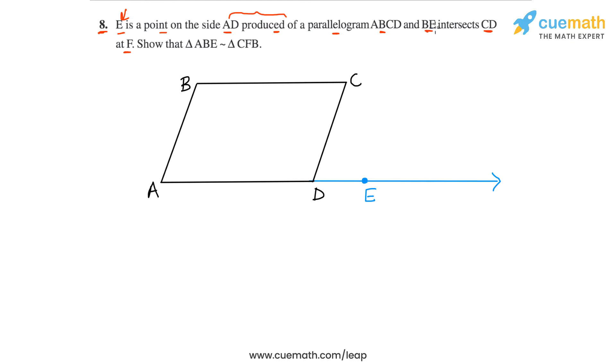And we are told that BE intersects CD at F. So let's join BE. So we join B to E like this. And this point here, where BE intersects CD, this point is F.